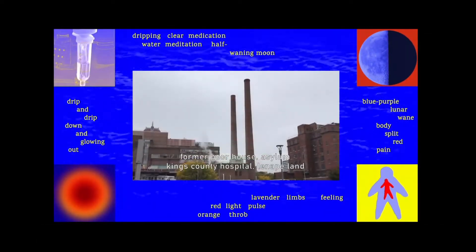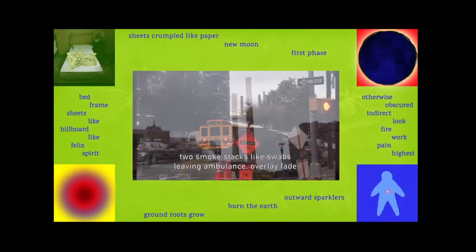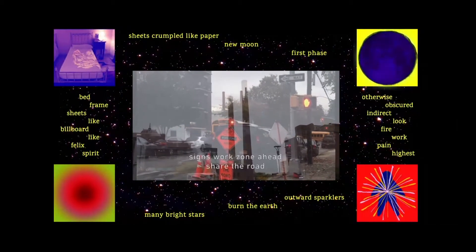Former poorhouse, asylum, King's County Hospital in Api Land. Two smokestacks like swabs, leaving ambulance. Overlay, fade, signs.